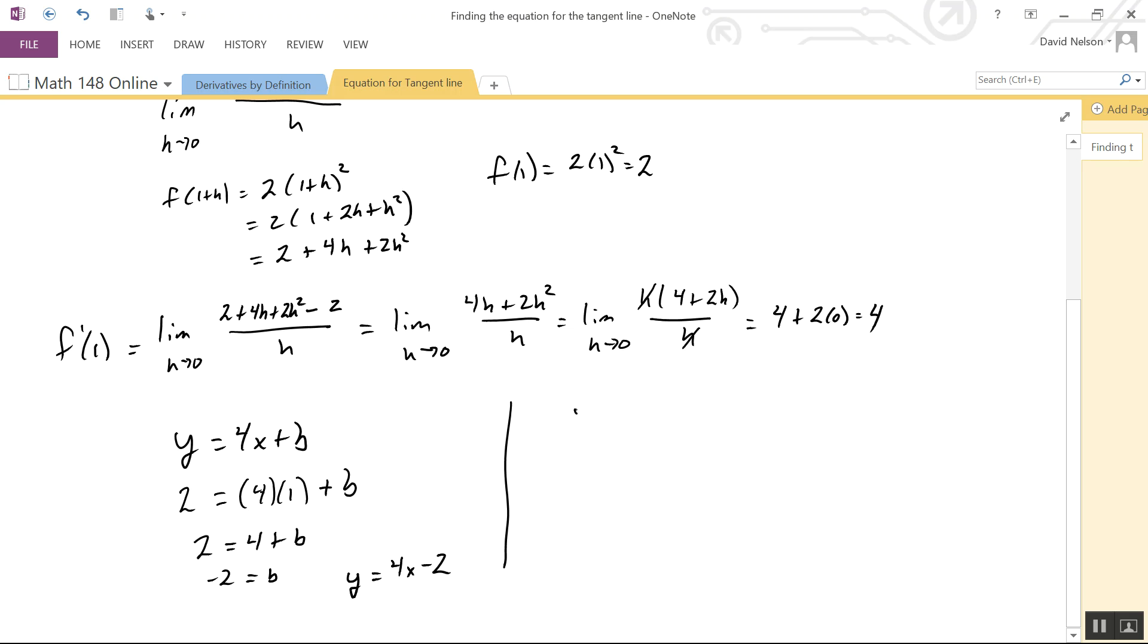So our equation is y = 4x - 2. The alternative is the point-slope formula. It's another formula you have to remember, but with point-slope, you just plug in the numbers.